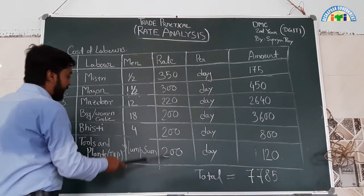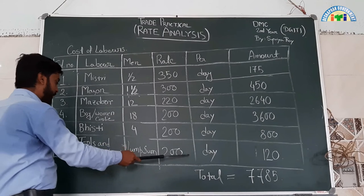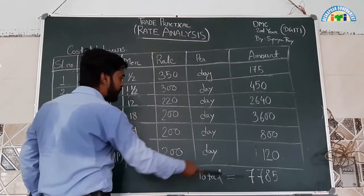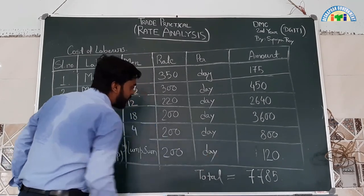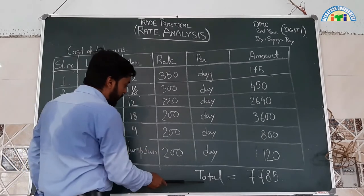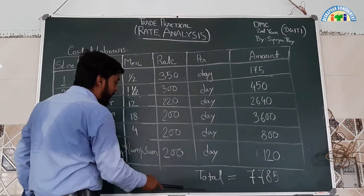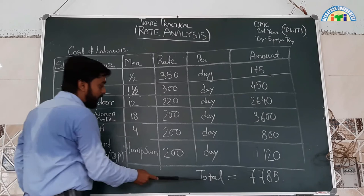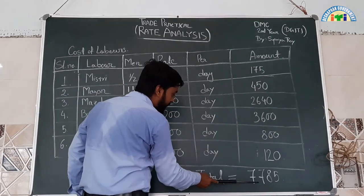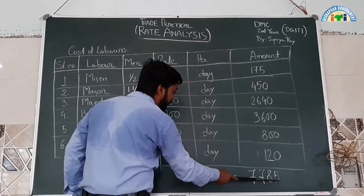Next and last, tools and plants at rate 200 rupees per day. Lower connector 120 rupees at 100 rupees per day. Total of labors is 7,785 rupees.